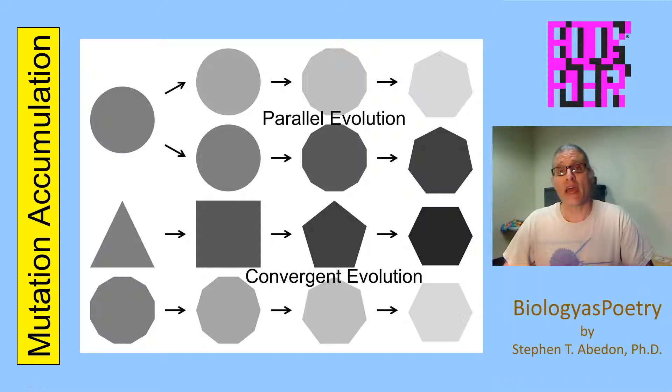These are simply aspects of what presumably in both cases is adaptive evolution. In parallel evolution, you have two lineages that started out essentially as the same. A speciation event has occurred or otherwise separation of the two gene pools such that you have independent evolution going on, but in parallel evolution that evolution is basically very similar if not identical.